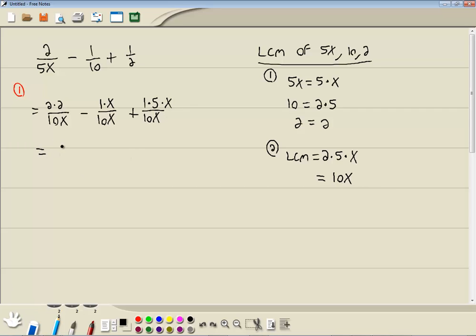Okay, let's see what that gives us. 2 times 2 is 4 over 10x, minus 1 times x is x over 10x, plus 1 times 5 is 5 with an x over 10x.